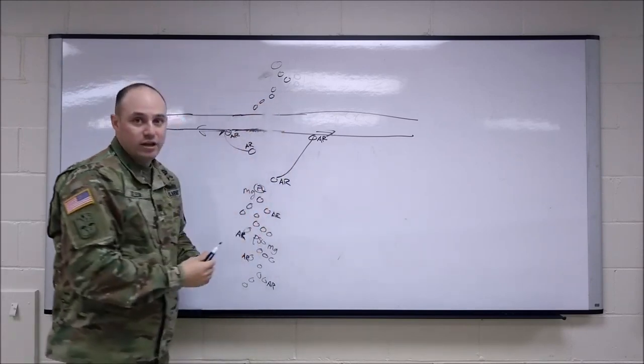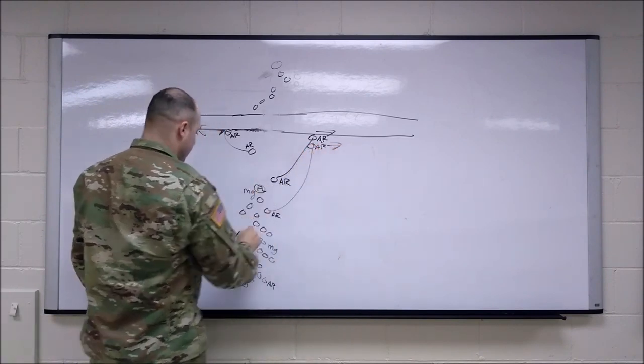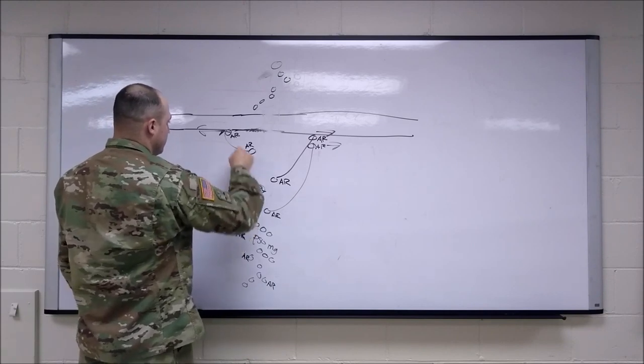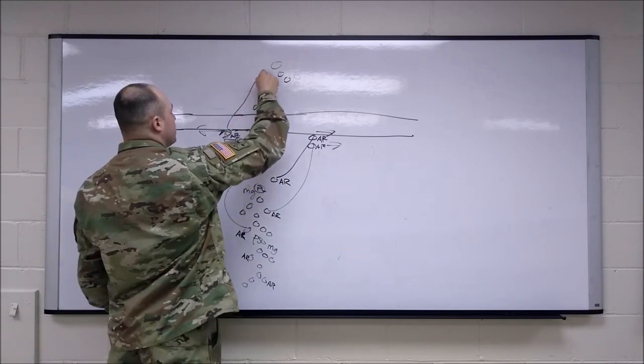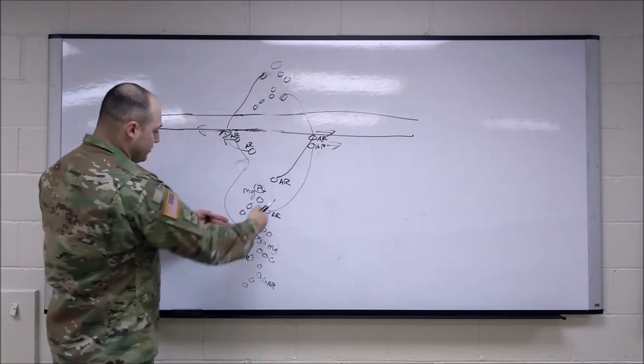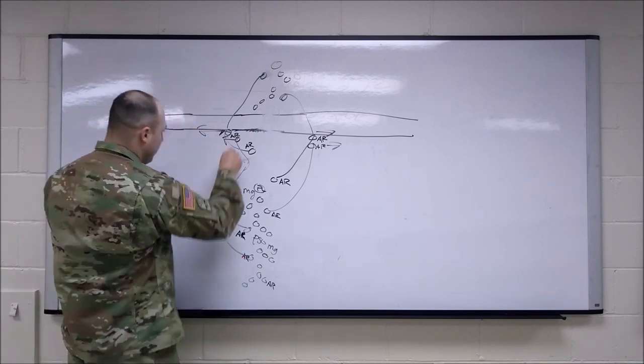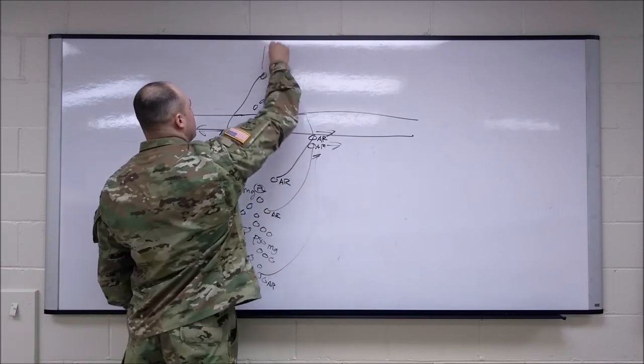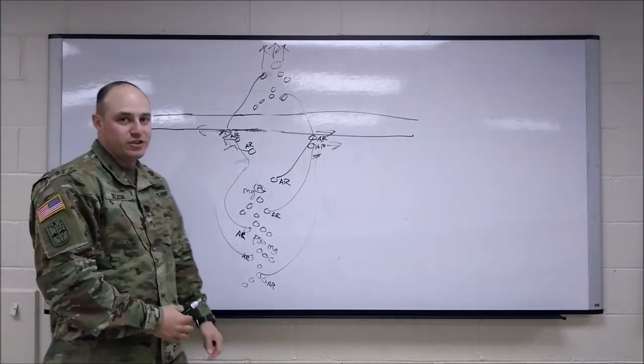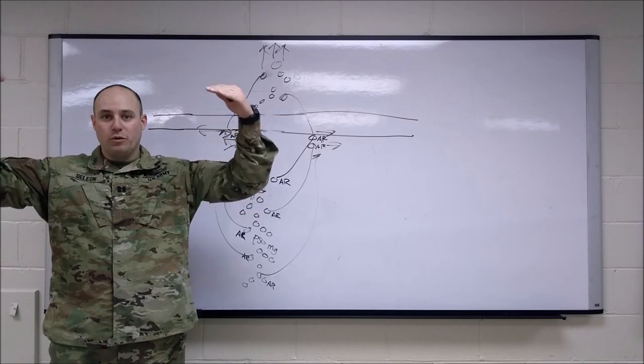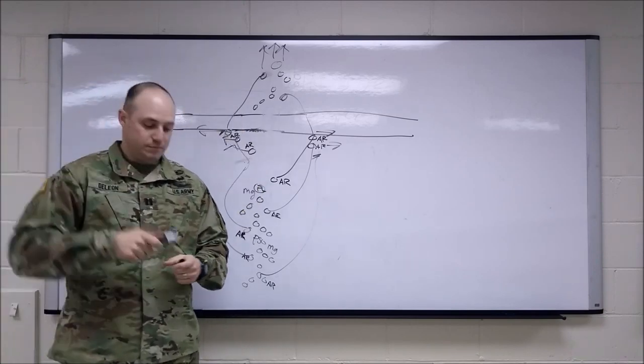So we have these two automatic riflemen start pulling security down the road. And while these automatic riflemen from the lead squad are looking down the road on either side, this squad, whether it's in buddy teams or it's in their modified wedge, they're crossing the road. So now, as this squad gets across the road, it just continues to move. And once that squad is through, the next squad's automatic riflemen move up and bump these guys off. So then these automatic riflemen pick up and cross and get back in formation. And now the second squad's automatic riflemen are pulling for it as it crosses. And then again, at the end, the third ARs do the same thing. And the whole platoon continues to move forward.